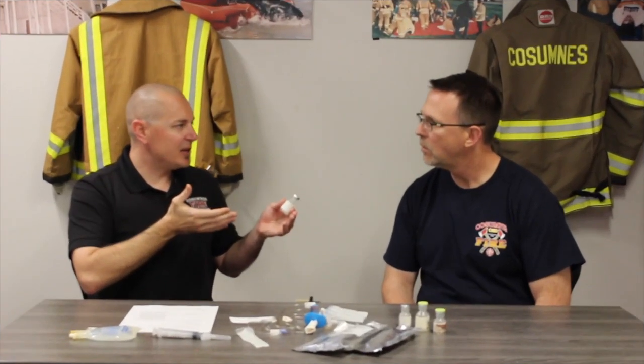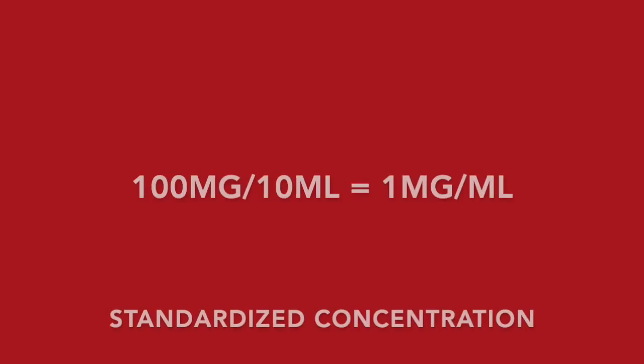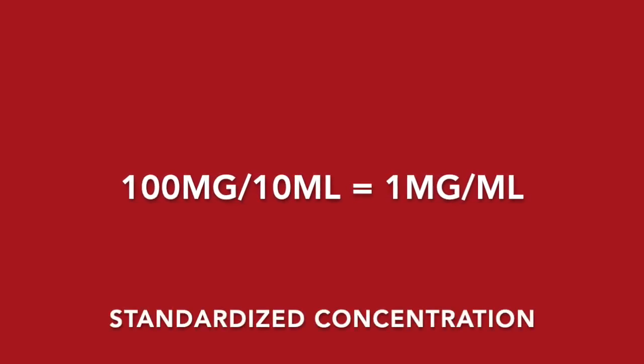What we've done is simplify the process and do a lot of the math ahead of time. For a 70 kilogram patient where we want to give 0.3 milligrams per kilogram, the math is relatively easy — it's 21 milligrams. If we're using the standardized concentration, all we have to do is move that decimal place one spot over and we know how much volume we need: 21 milligrams equals 2.1 mLs. So we'd put our 2.1 mLs into our bag — this is for the 70 kilogram patient example we're using.